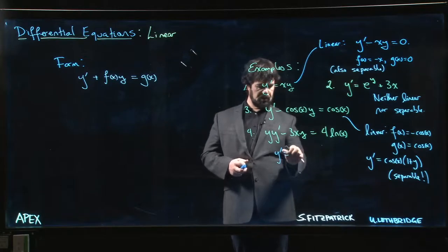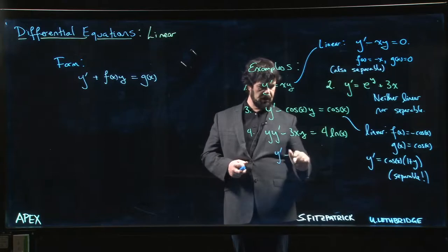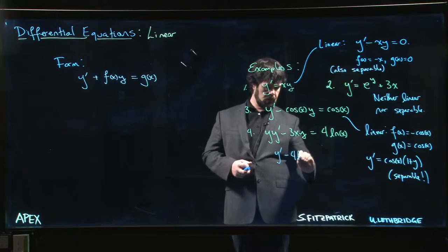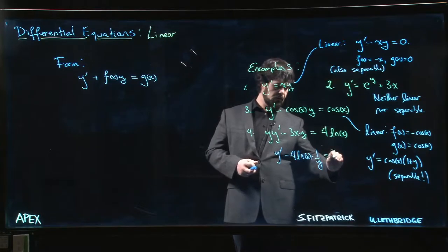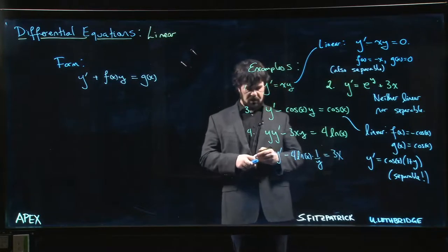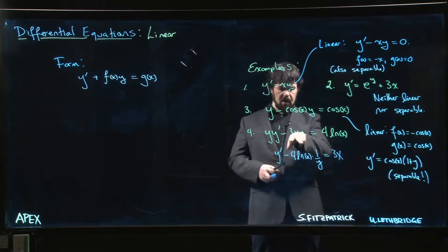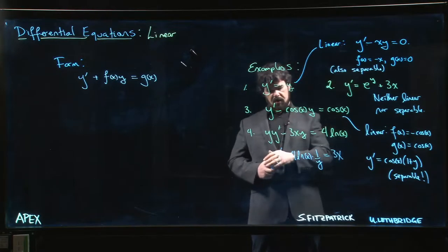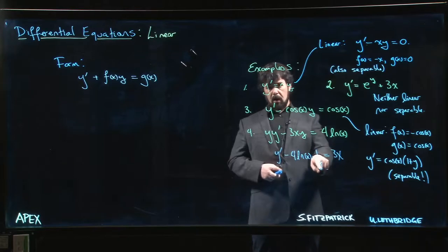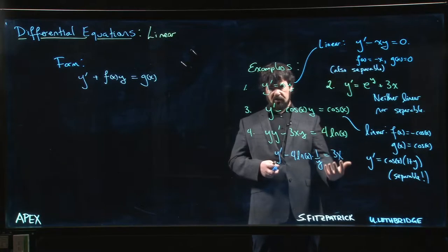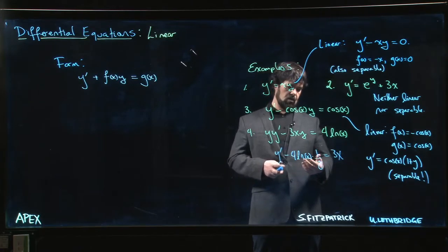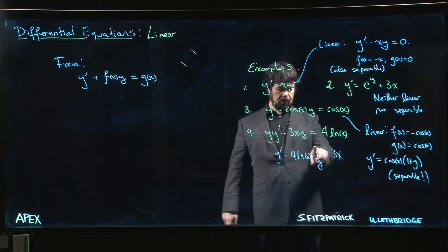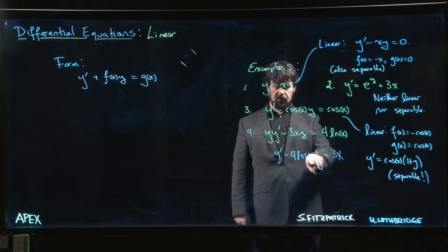We could rearrange it like this: y prime minus 4 log x times 1 over y is equal to 3x. I divided everything by y, moved that to the other side, and brought that over. Because you have 1 over y there rather than y, that's what's stopping it from being linear. We'd need to have y here, not 1 over y, in order to have a linear equation. It's close, it's almost the right form, but this bit is wrong, so it's not going to be linear.